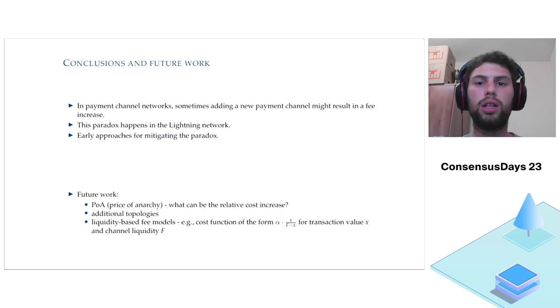To conclude, we showed Braess's Paradox appears in Layer 2 blockchain networks, such as Bitcoin's Lightning Network. The full paper additionally includes a theoretical analysis of the conditions for the paradox appearance and also presents approaches for mitigating the paradox. In future work, we intend to expand our analysis to additional topologies and fee models. Thank you all for listening.